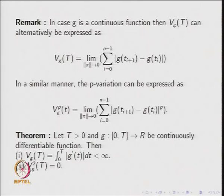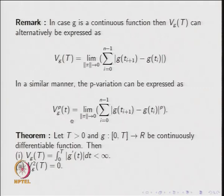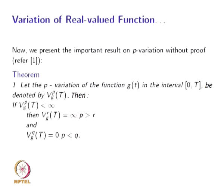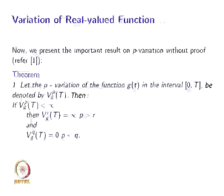Later in this video lecture, you will see how to calculate the second order variation, known as the quadratic variation, for Brownian motion. In finding the quadratic variation of Brownian motion, g(t) will be replaced by W(t) and the limit will be taken in the sense of the limit of a sequence of random variables. We now have the following theorem: if g is a continuously differentiable function on [0, T], then the first order variation is ∫₀ᵀ |g′(t)| dt and the second order variation is 0.